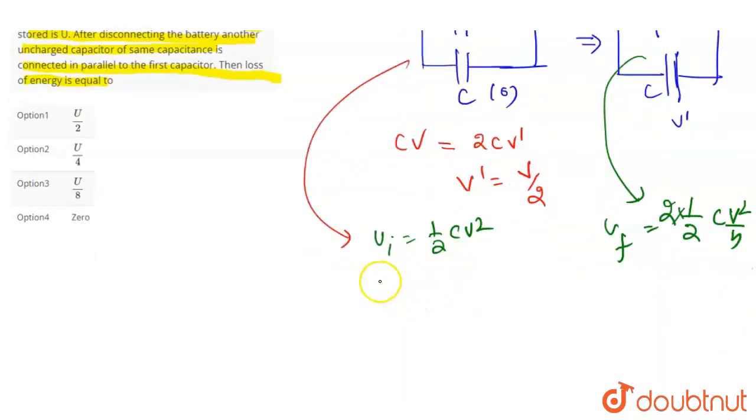U initial is half of CV square, and U final is half of CV square by 4. So loss will be their subtraction. Loss is this minus this, that is equal to CV square by 4.